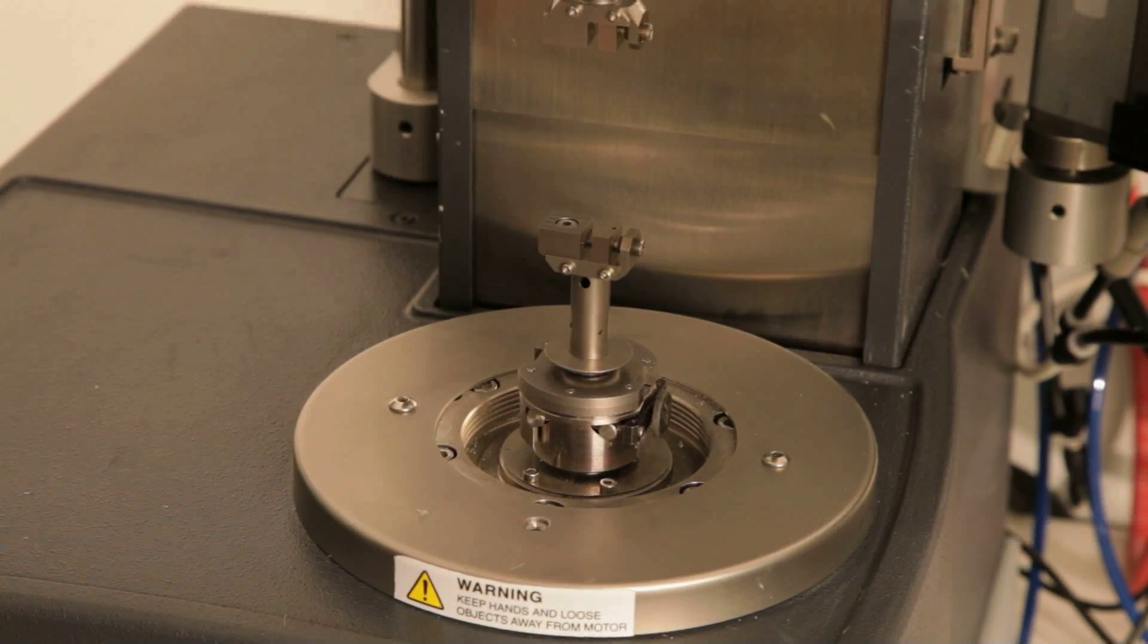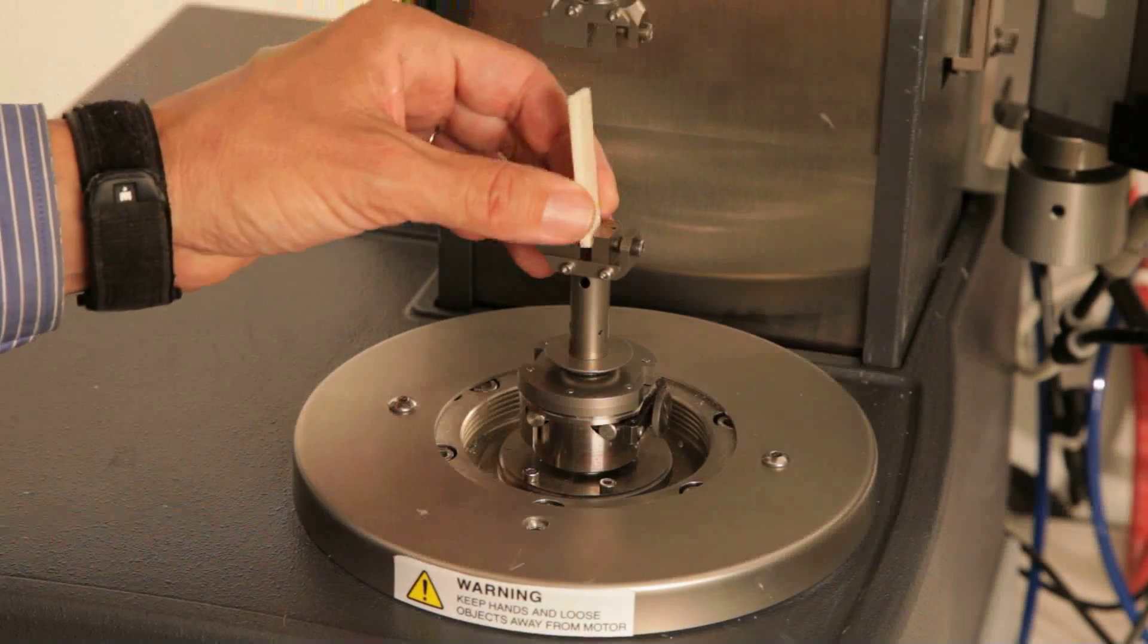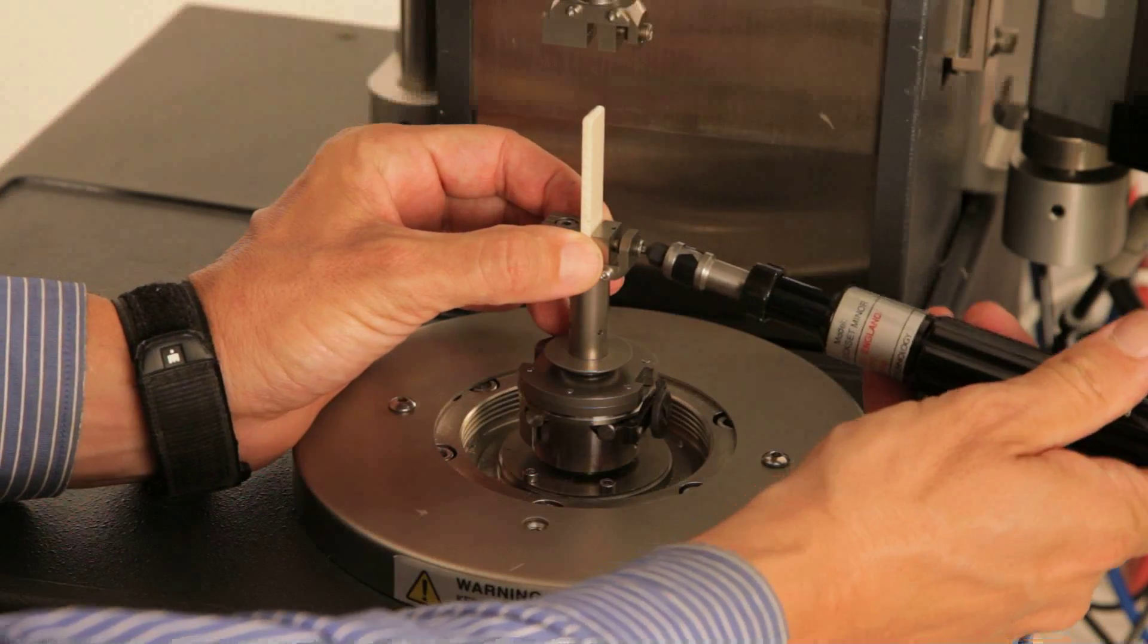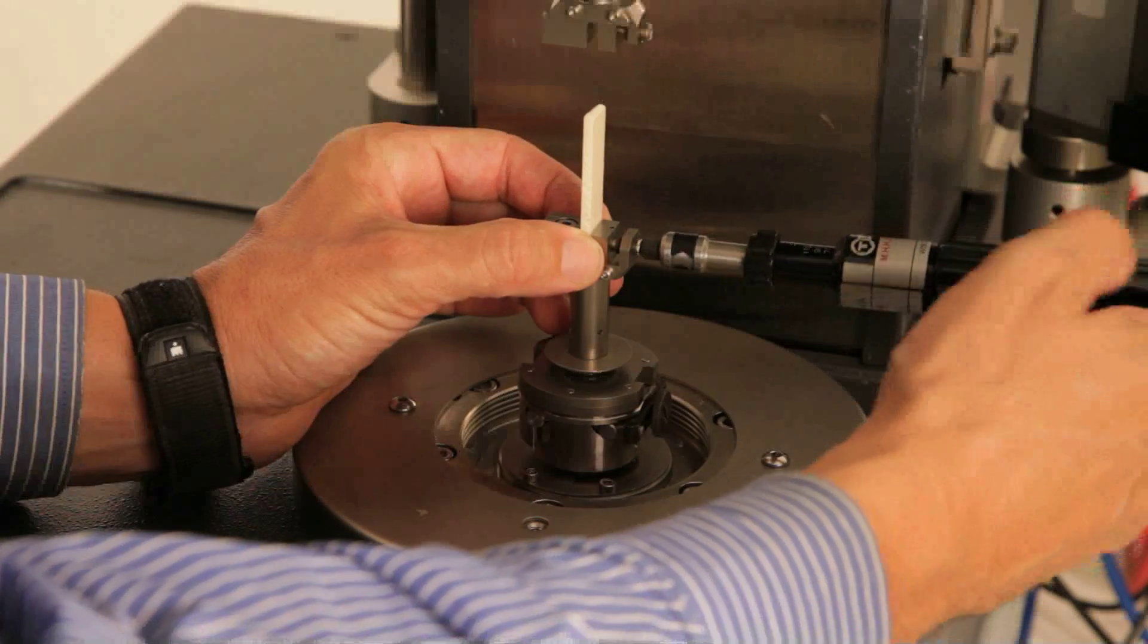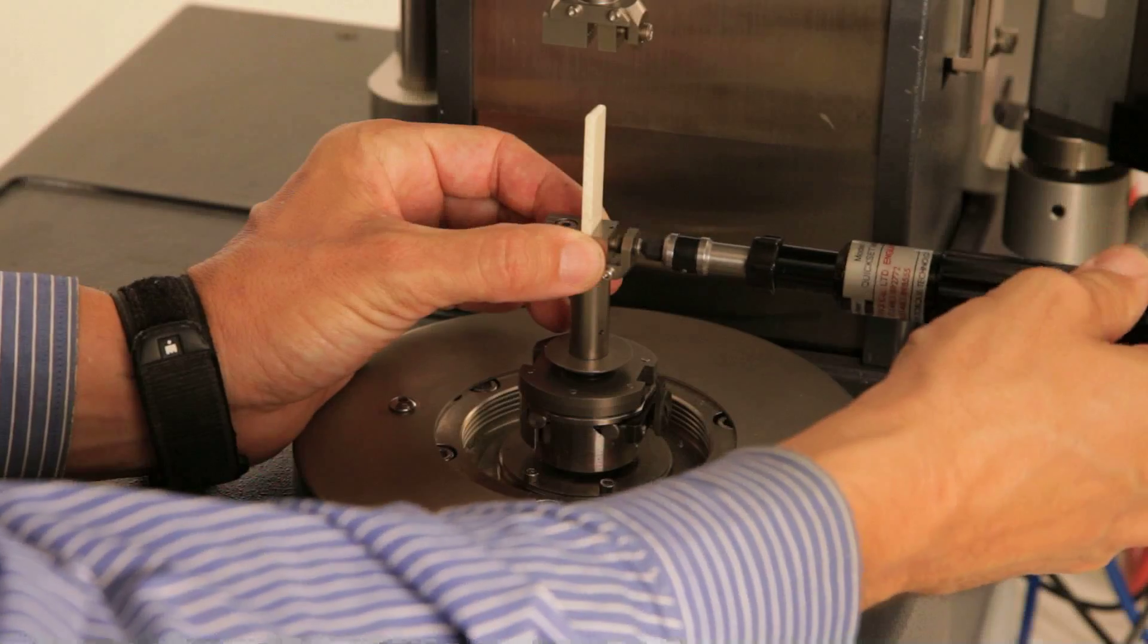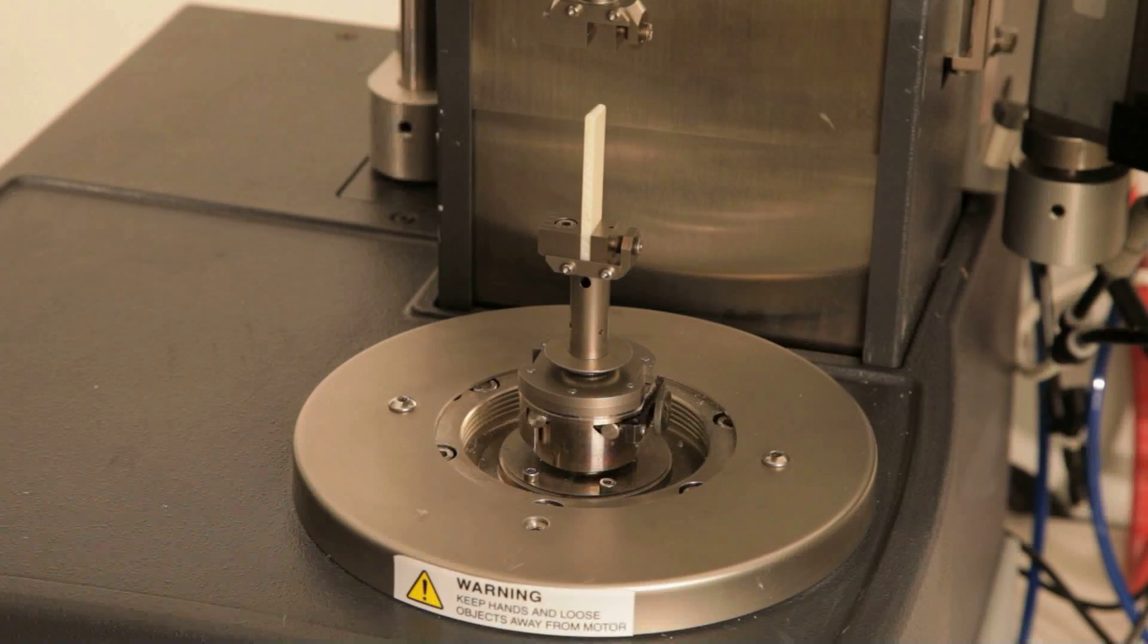Now we can load the polymer. Insert the sample into the lower clamp. Center the sample using the reference lines on the clamp and then tighten the sample in place. Be sure to align the upper and lower fixtures with the sample to release any pre-torque on the sample.